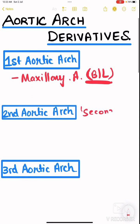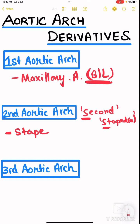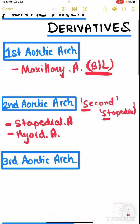From the second aortic arch — remember: S for second, S for stapedial — the stapedial artery and hyoid artery originate, both bilaterally.